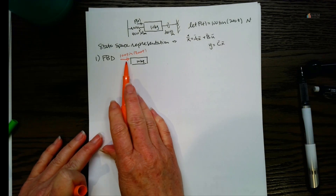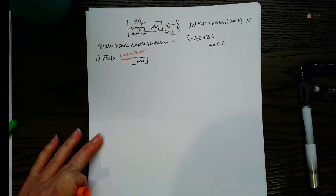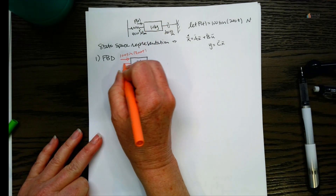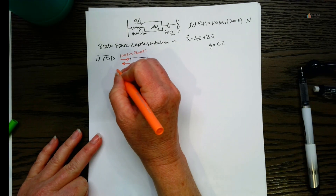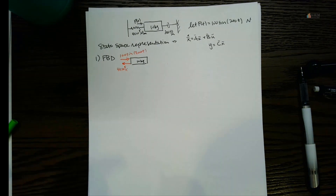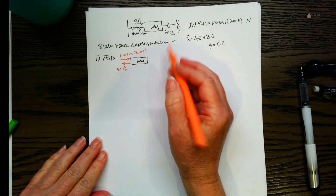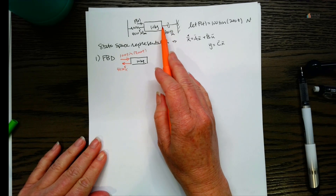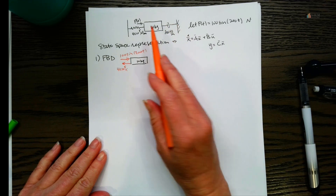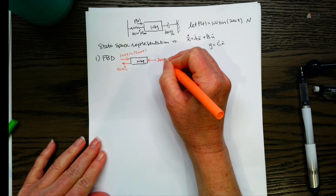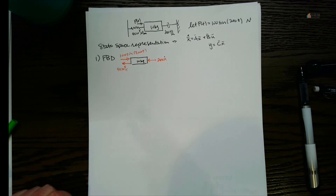If the applied force is pushing to the right, the spring force acts to the left — springs don't like to be stretched, they want to return to their natural length. So the spring force is the constant k times x, the amount of stretch or compression. We also have our damping force. Dampers work in opposition to motion, so that force acts to the left as well, and equals the damping coefficient times x dot.